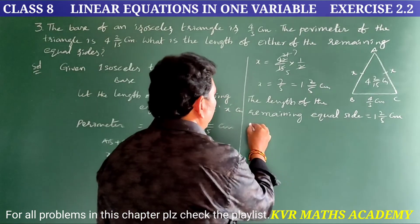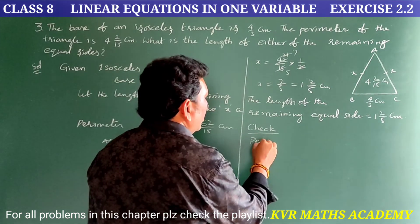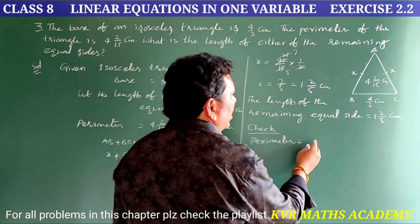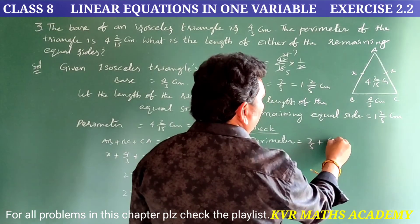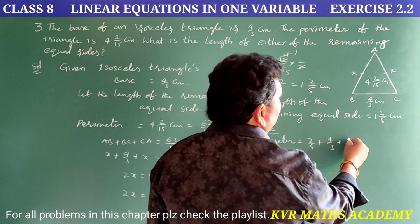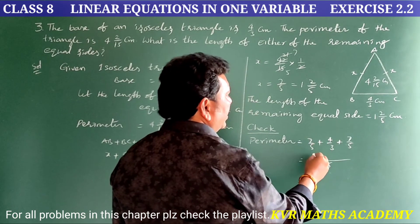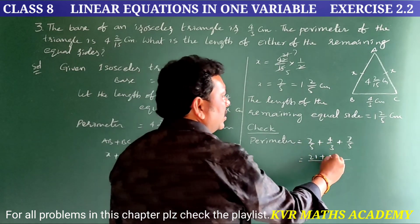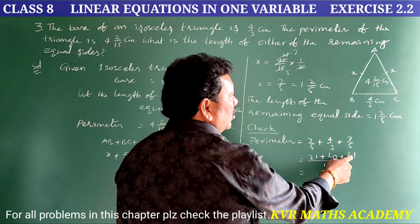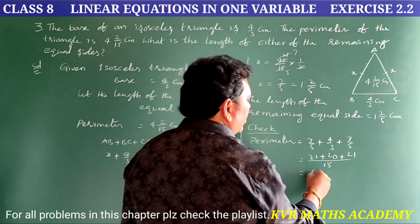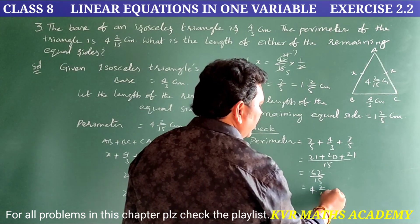Let us check. Perimeter = x + 4/3 + x = 7/5 + 4/3 + 7/5. The LCM of 5 and 3 is 15: 7/5 = 21/15, and 4/3 = 20/15. So 21/15 + 20/15 + 21/15 = 62/15 centimeters. The perimeter matches, confirming the result is correct.